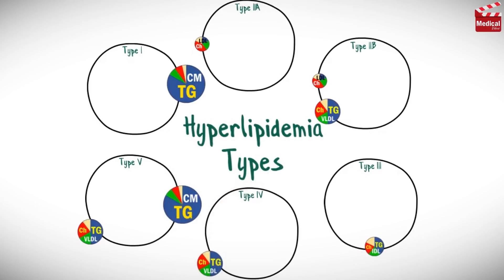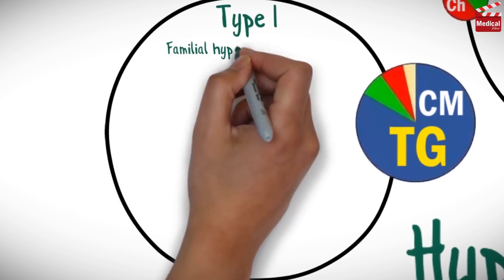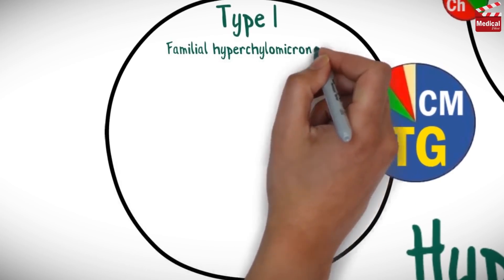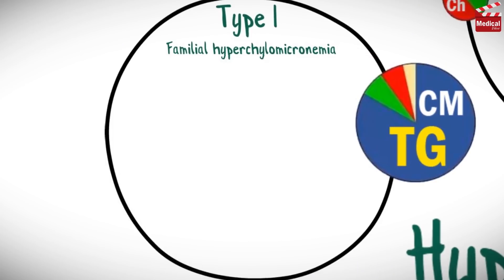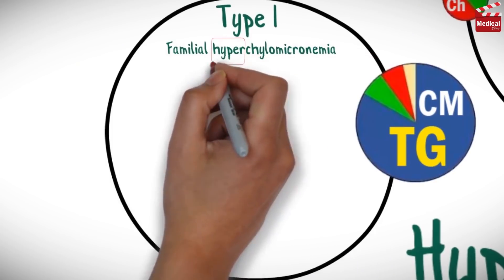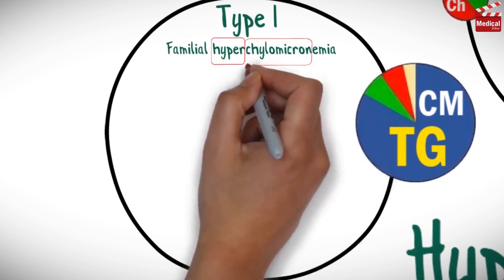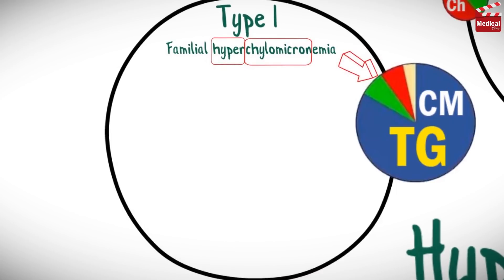There are five types of hyperlipidemia, and type 2 is classified into two subtypes. Type 1 is called familial hyperchylomicronemia. As its name suggests, this type is characterized by a high amount of chylomicrons in the blood, and we know that chylomicrons carry a high amount of triglycerides.